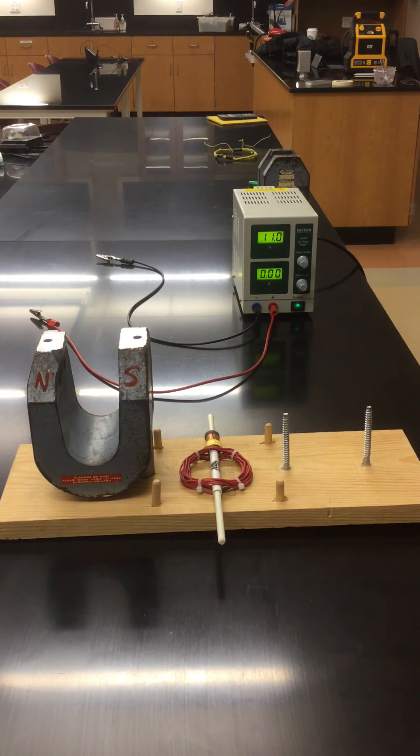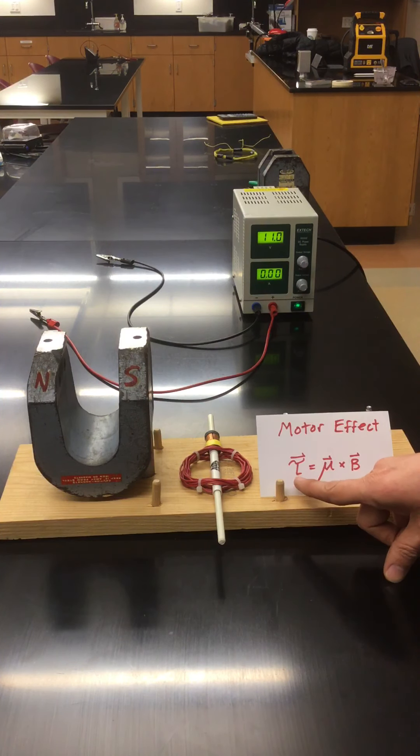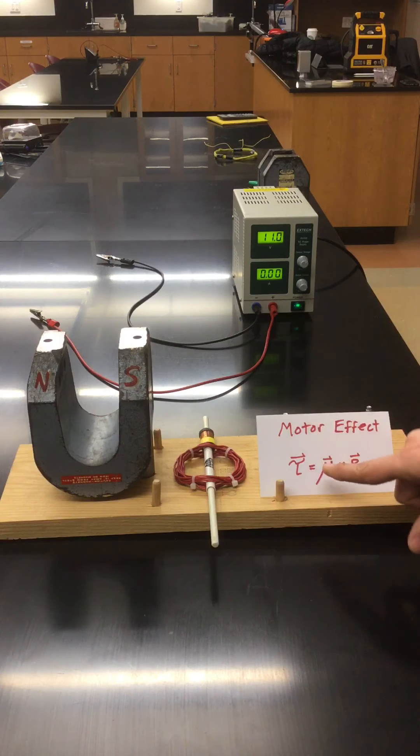So in this demonstration we want to talk about something called the motor effect. The formula here says the torque on a current loop is equal to, here's a new symbol, mu. Mu shows up a lot in physics formulas doesn't it?